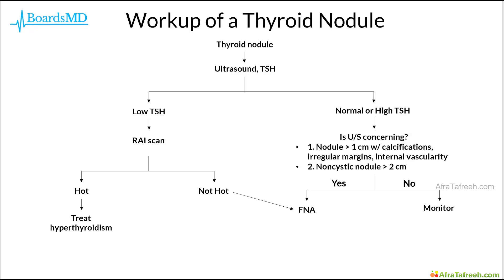There is a second pathway by which we can arrive at getting this FNA. If we perform our ultrasound and TSH and the patient has a normal or high TSH, then we need to look at the thyroid ultrasound and ask whether it is concerning for malignancy. We can answer yes if the nodule is greater than 1 cm and has calcifications, irregular margins, and internal vascularity, or if the lesion is a non-cystic nodule greater than 2 cm.